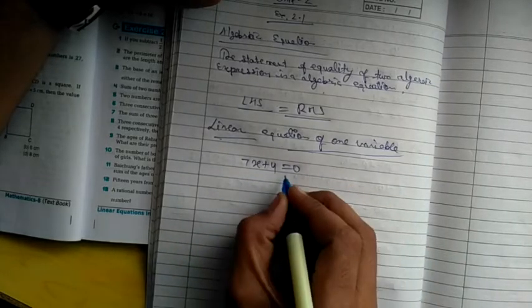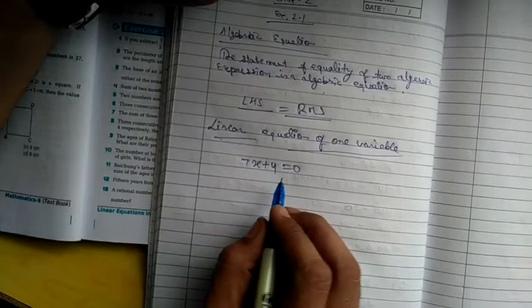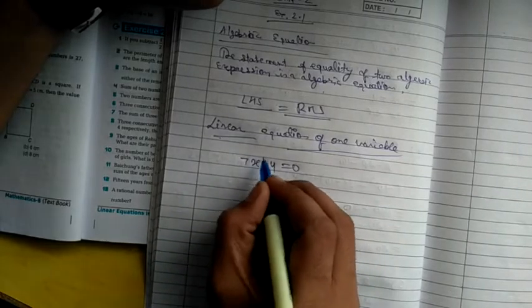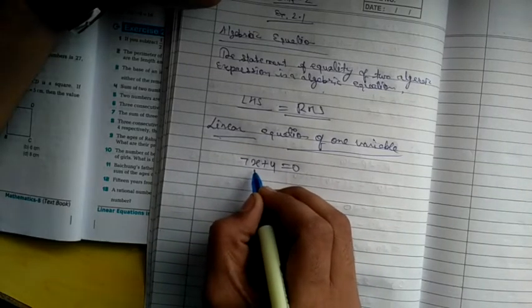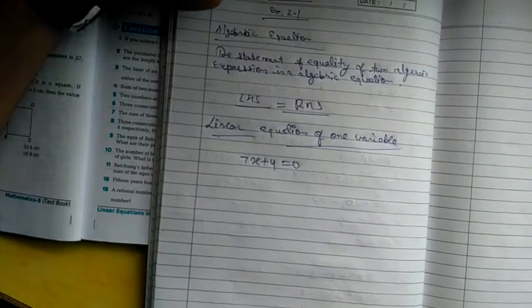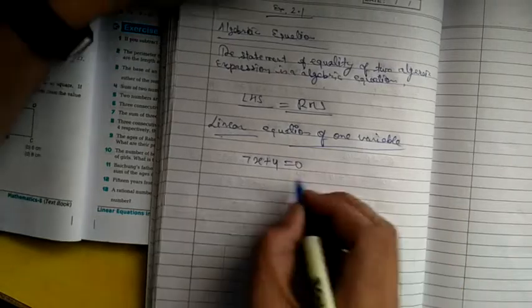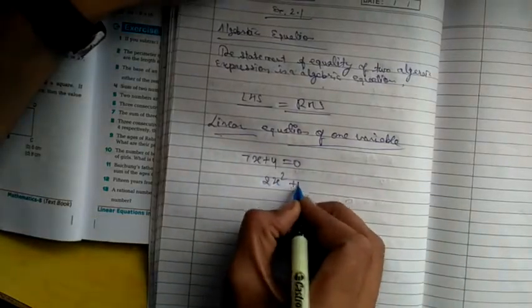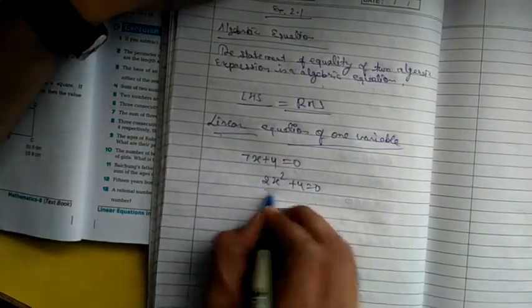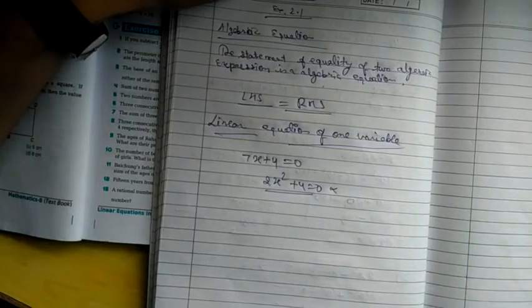Okay, because this is zero. You can see that this power is how much? Variable is two, is not. So we can say that this is our linear equation of one variable. If you have 2x² plus 4 equal to zero, this is our linear equation of one variable.